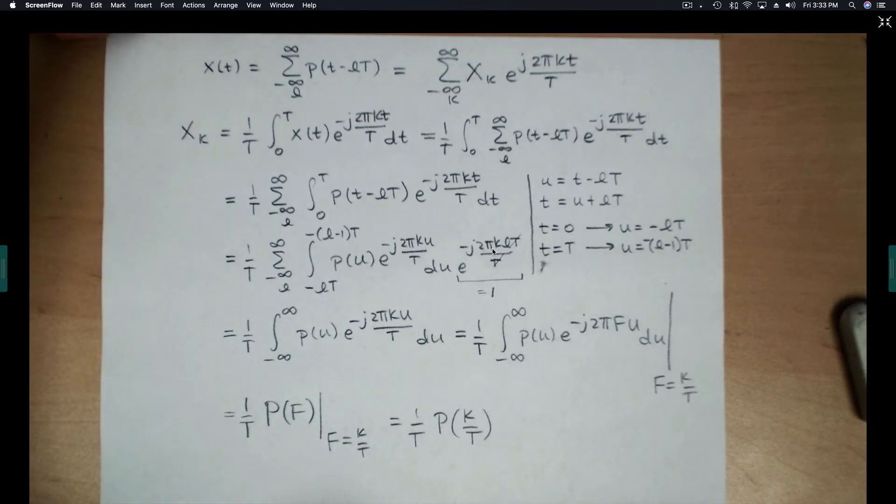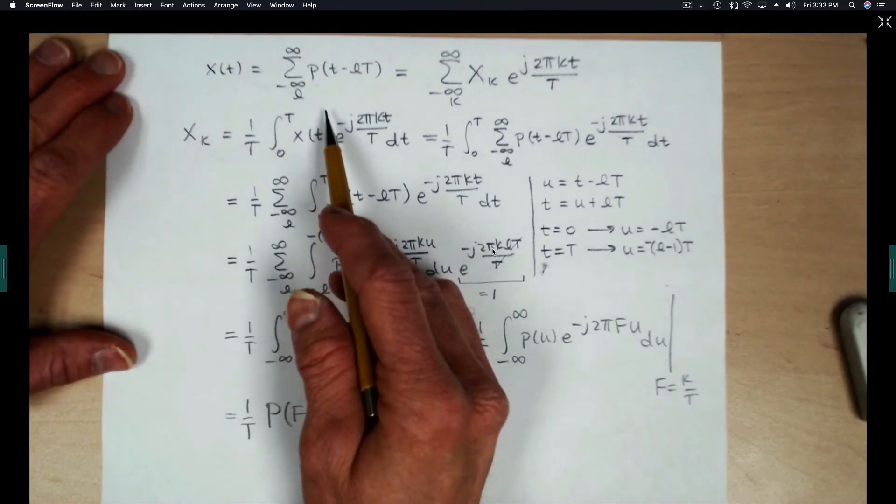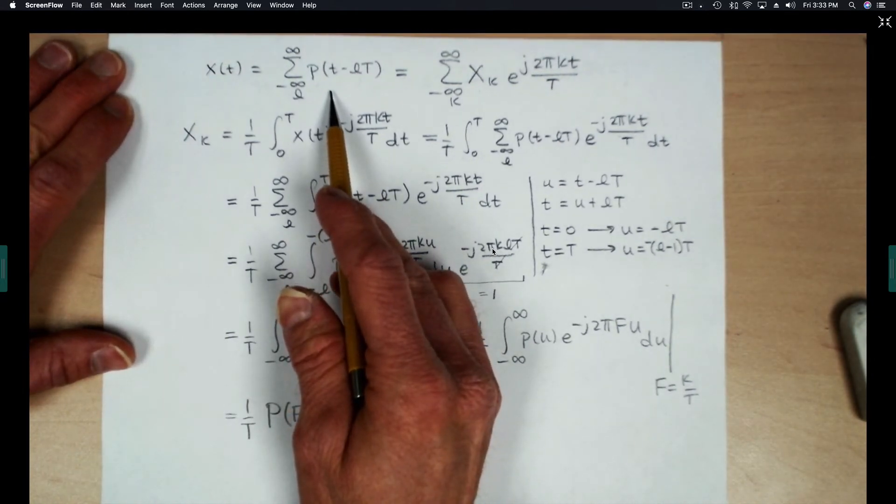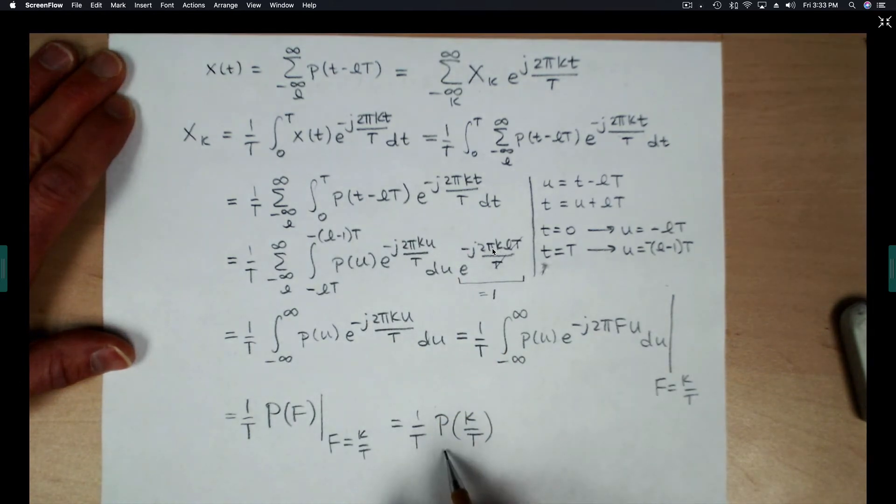So we see that replication of a basic pulse, periodic replication of a basic pulse in the time domain corresponds to a sampling operation in the frequency domain.